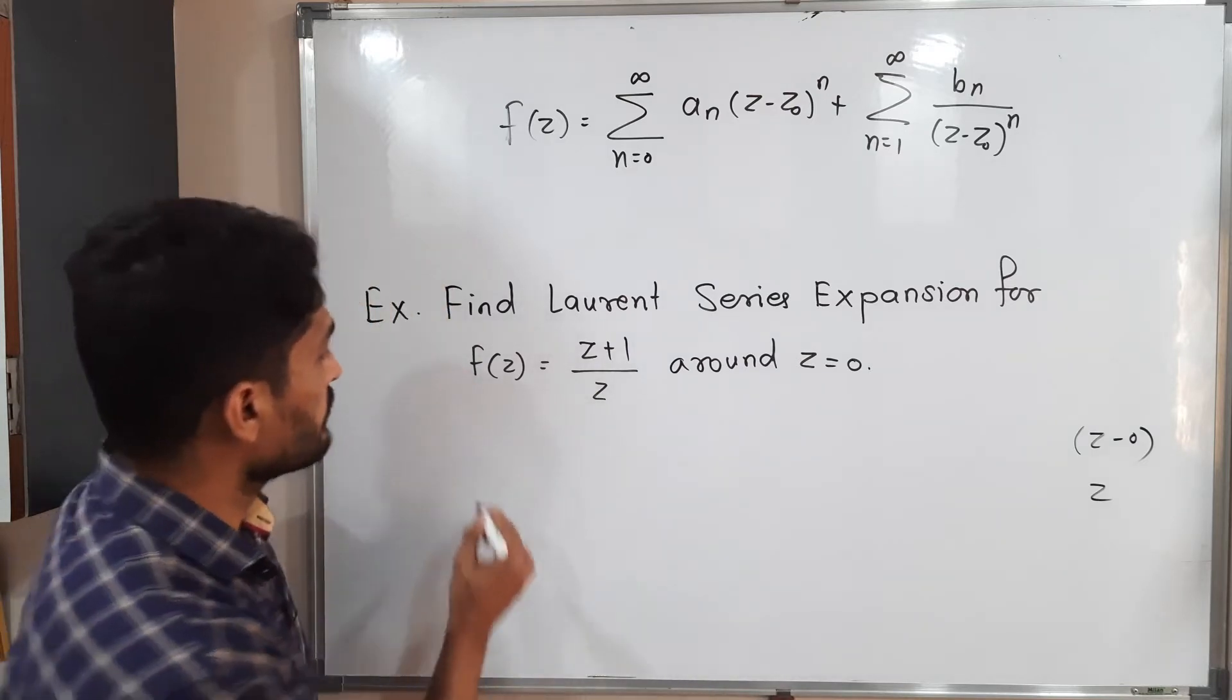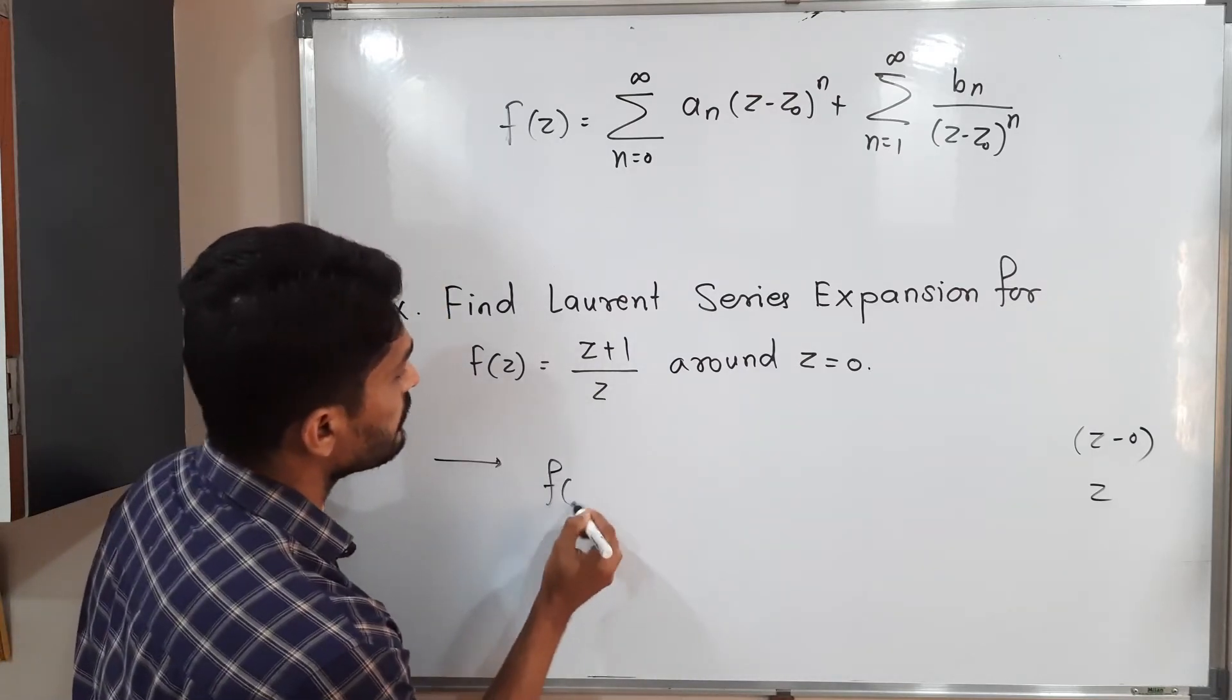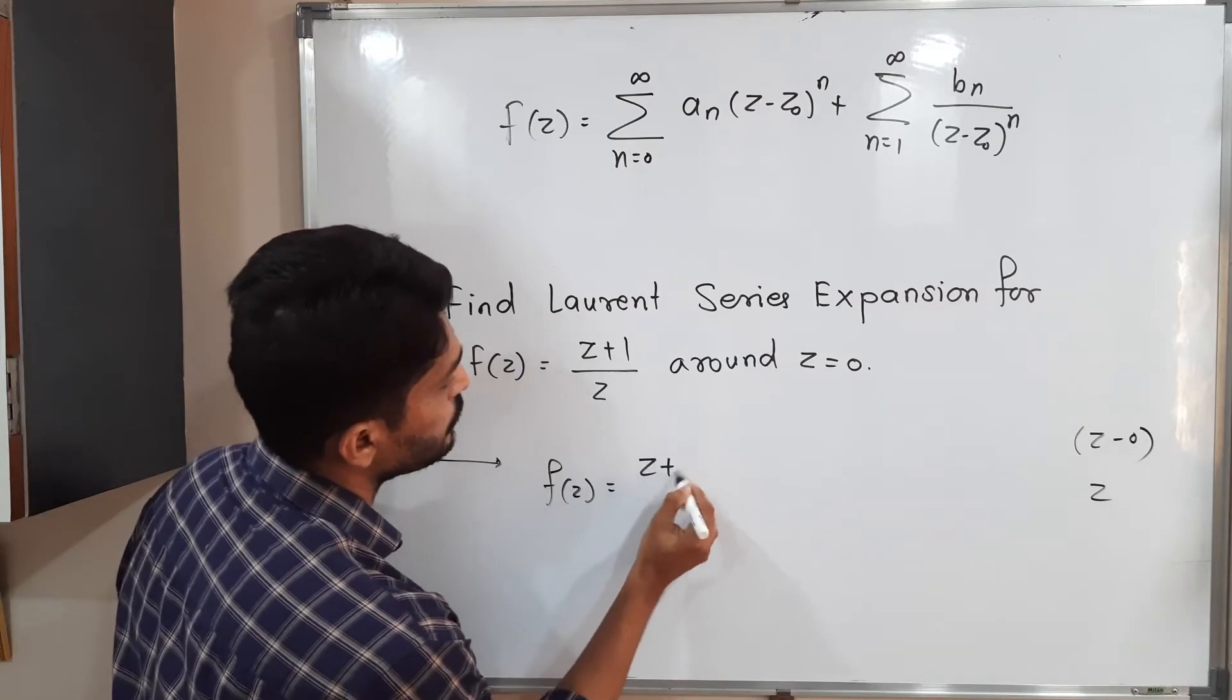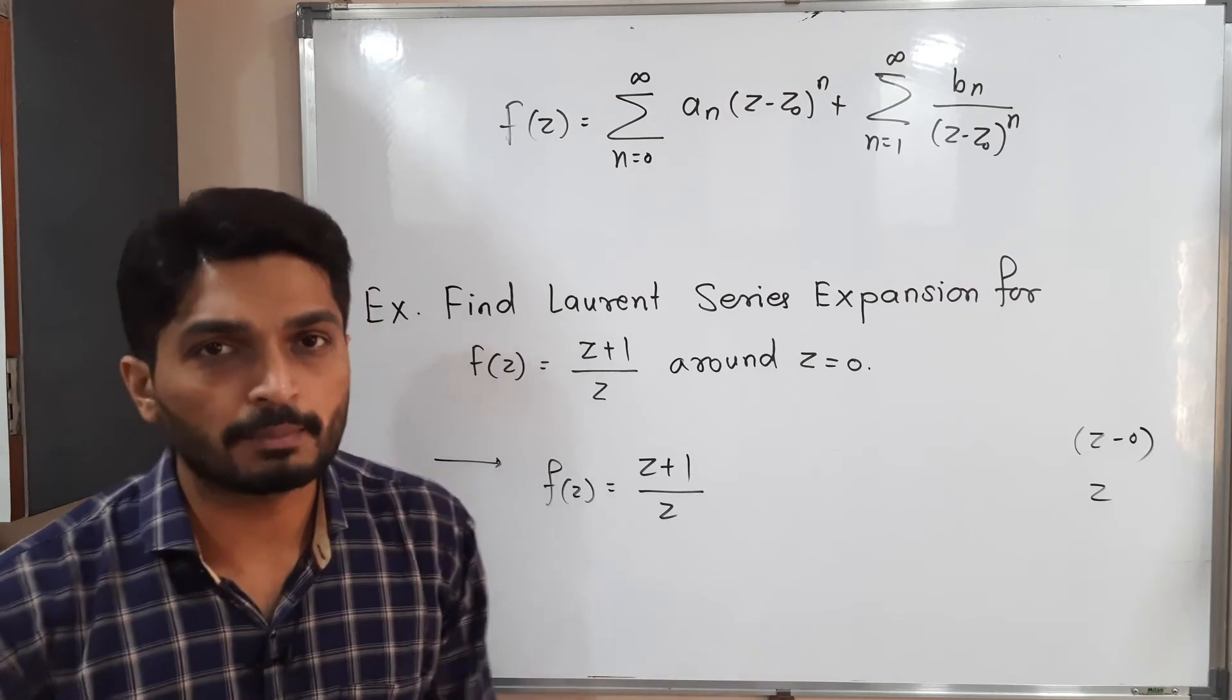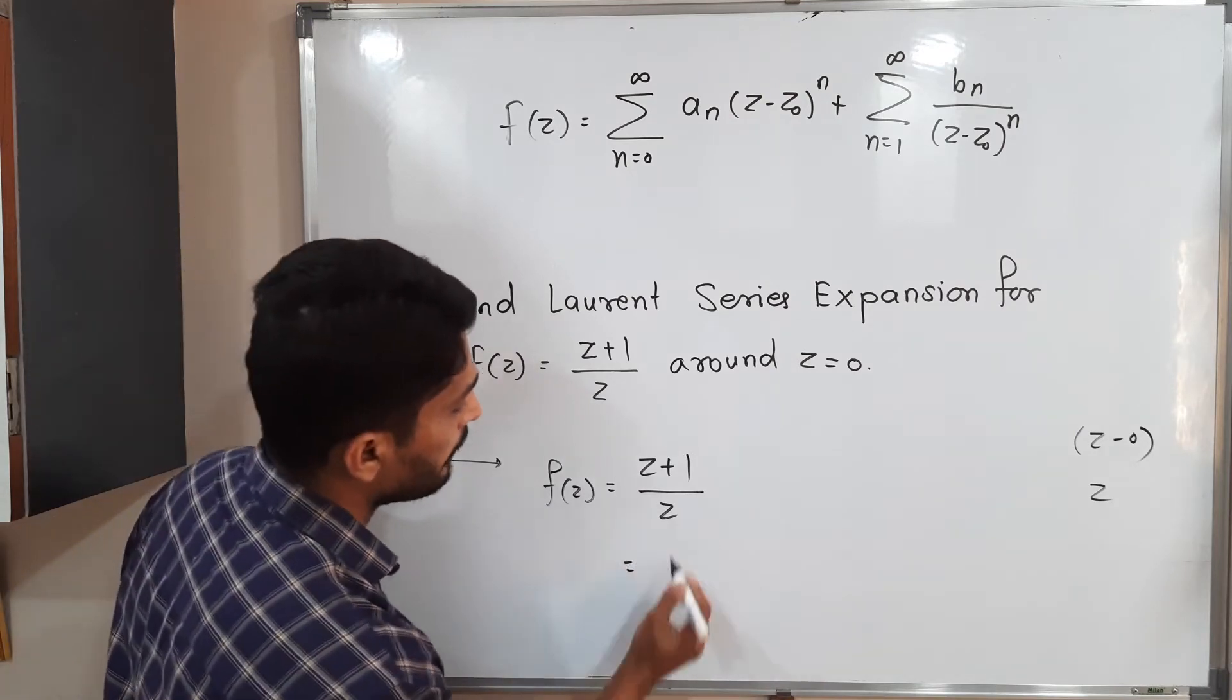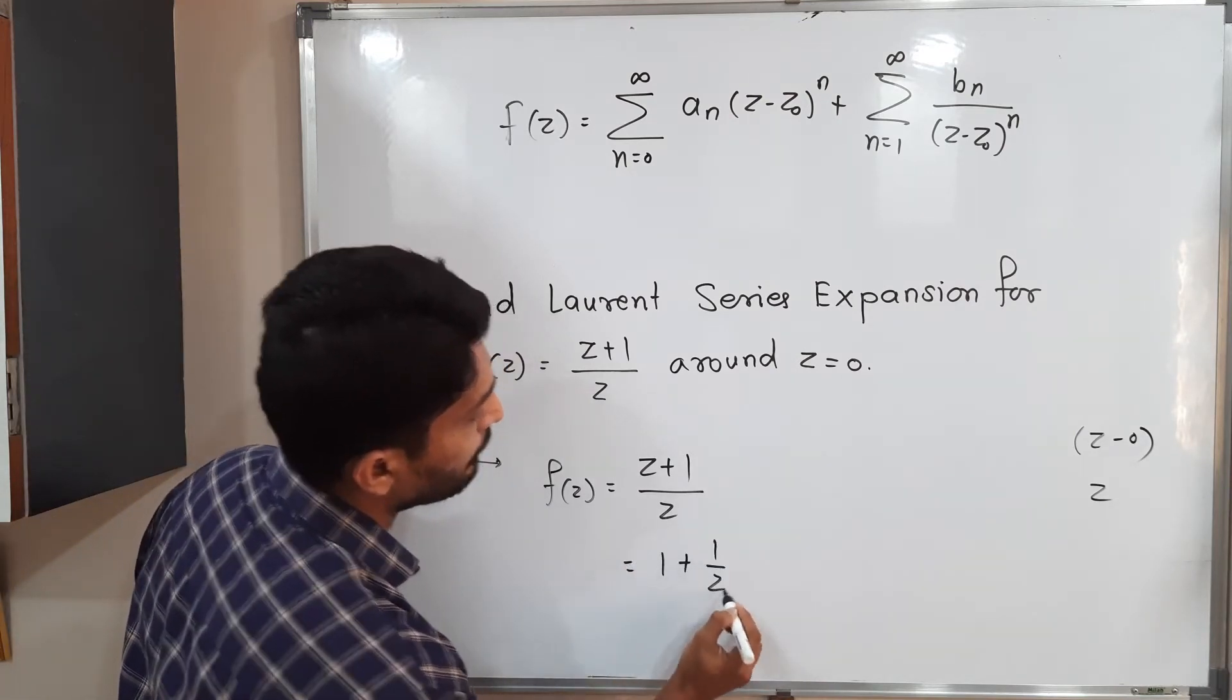Let us find it. I will start with the given function f of z is equal to z plus 1 divided by z. Actually task is so much simple. If I divide separately what will happen: z upon z plus 1 by z.